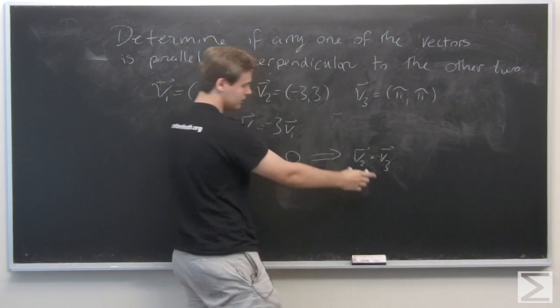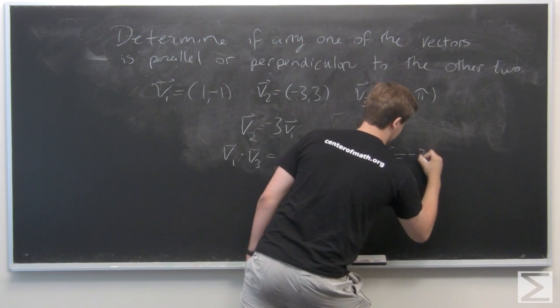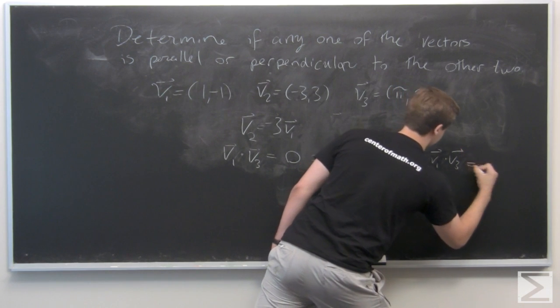Writing it out explicitly, v2 dot v3 equals -3 times v1 dot v3, which is equal to zero.